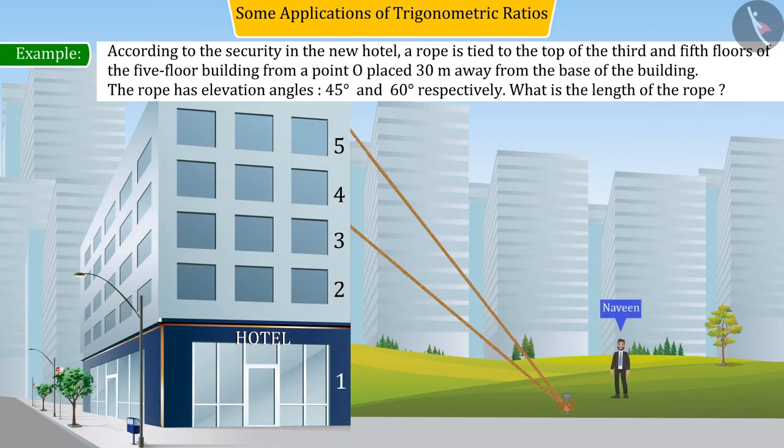According to the security in the new hotel, a rope is tied to the top of the third and fifth floors of the five-floor building from a point O placed 30 meters away from the base of the building. The rope has elevation angles from point O at 45 degrees and 60 degrees respectively. But Naveen does not know what is the length of the rope used for this.